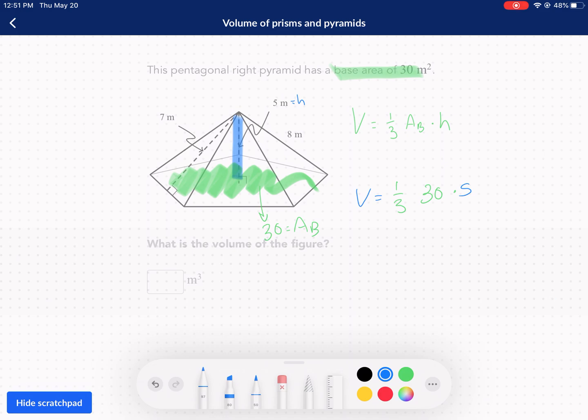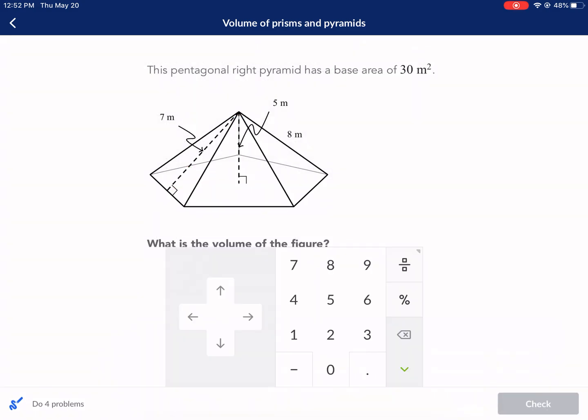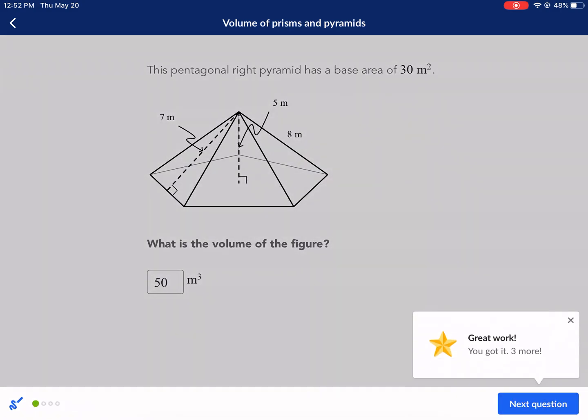We're going to multiply that by five and that's going to be equal to our volume. What I would do here is anytime you can multiply a fraction by one of the following integers, go ahead and do that first to reduce your numbers. So one third times 30, 10 times five. So we're going to have 50 meters cubed. 50 is our answer. Next question.